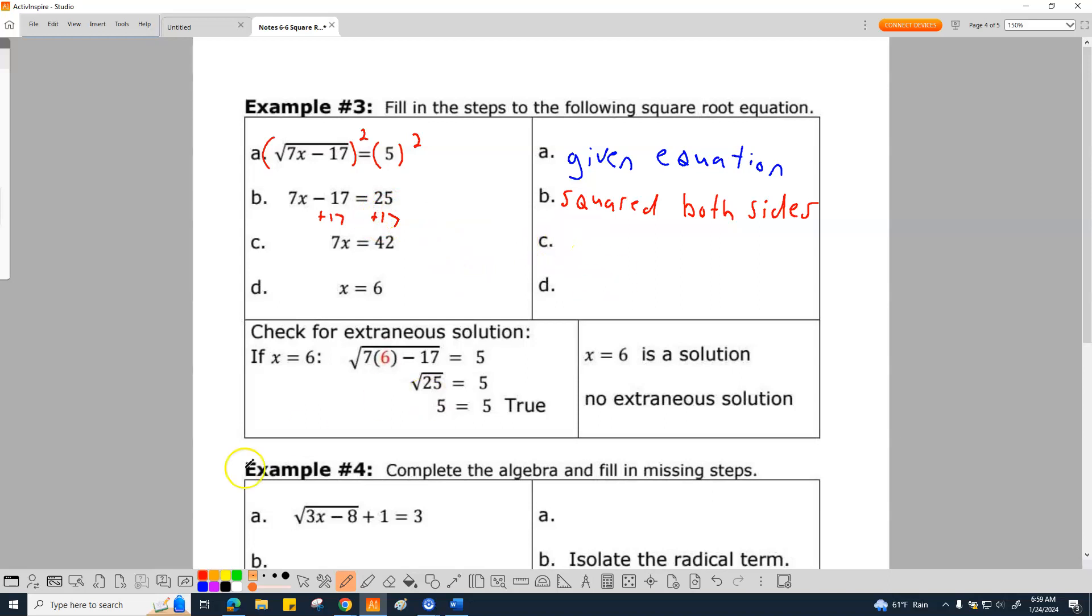So, here we go. Oh, I should have done a different color. It doesn't matter. It's plus 17 on both sides. So, C is combined like terms. You can more think about it like, how did we arrive here at C? What happened from B to C? We combine like terms.